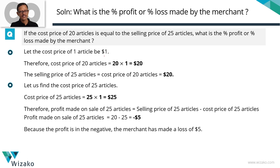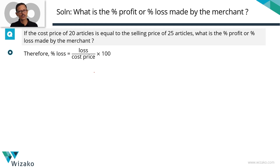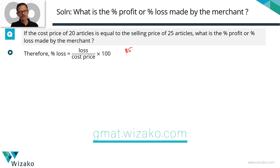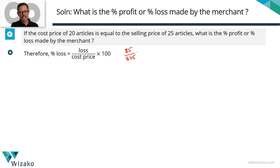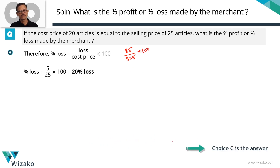Here's a recap of the values: cost price of one article is $1, so cost price of 20 articles equals $20, which is the selling price of 25 articles. Cost price of 25 articles is $25. Profit = SP minus CP = negative, so the merchant has made a loss of $5. Percentage loss = (loss / cost price) × 100 = (5 / 25) × 100 = 20%. The merchant makes a 20% loss. Choice C is the correct answer.